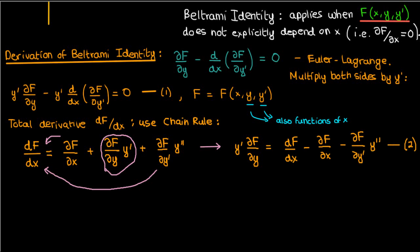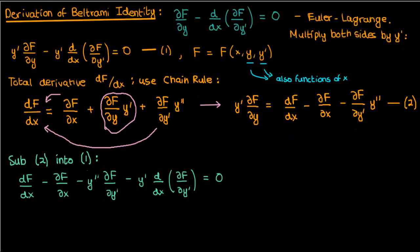Interestingly enough, this exact same quantity, the y prime times partial F partial y that I just isolated, also appears in equation 1. So what we're going to do is substitute equation 2 into equation 1, and here's what we'll end up with.